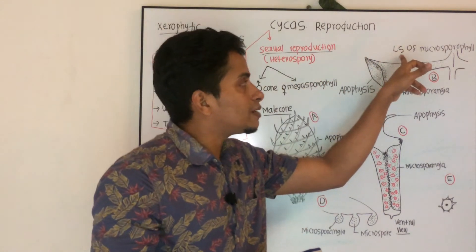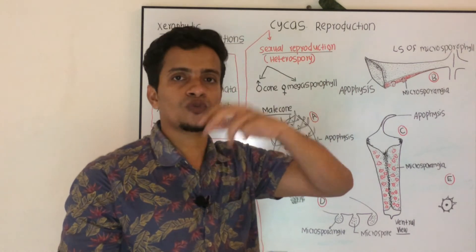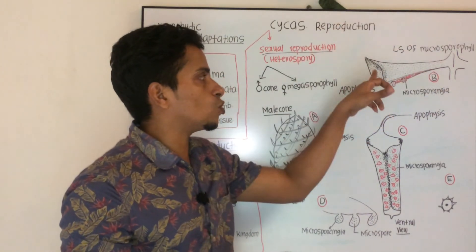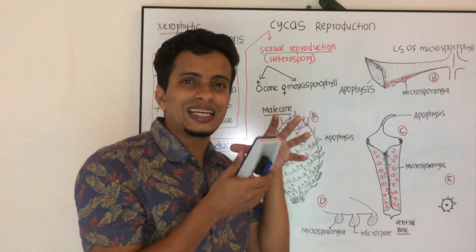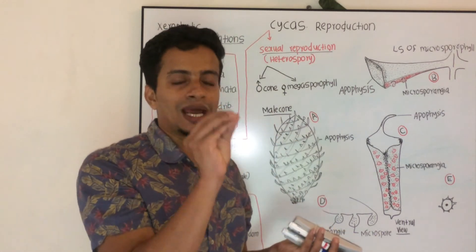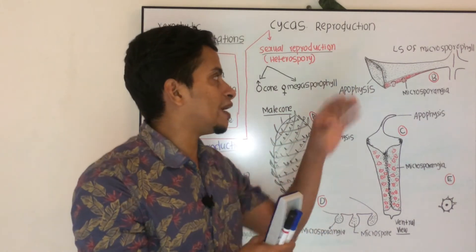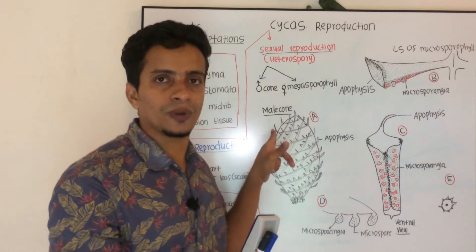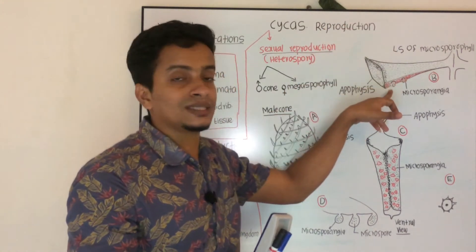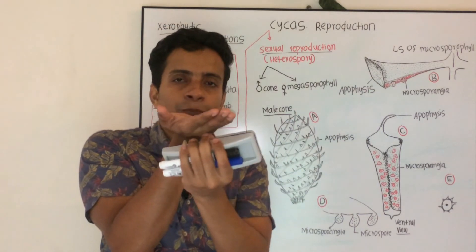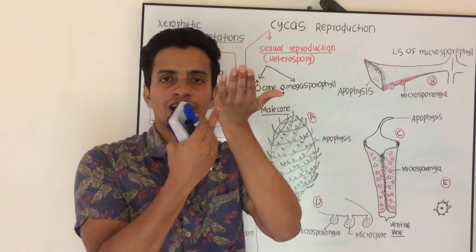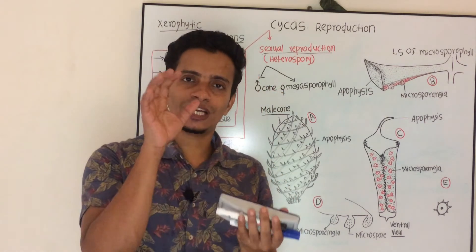Let us look at the LS of a microsporophyll. The terminal part of the microsporophyll is sterile and is called the apophysis. In the reproductive structures, the sterile region is referred to as the apophysis. On the lower/ventral side you can see the microsporangia are arranged, and the leaf-like structure acts as a protective covering.